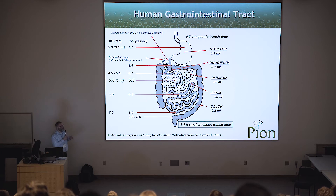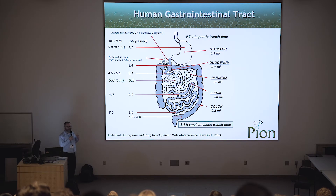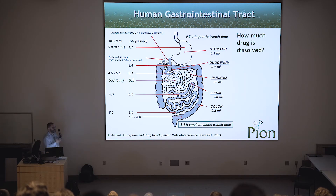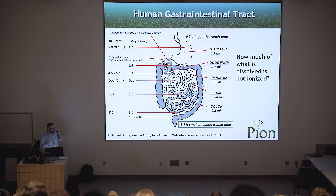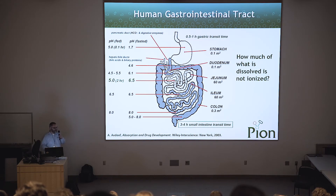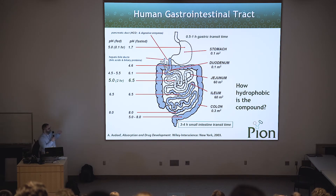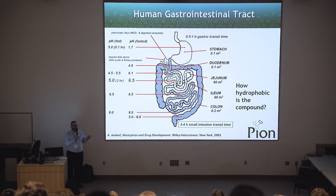What does our company do? Our company develops instrumentation for pharmaceutical companies to do drug research — what happens when you take a pill. We want to answer how much of a drug is dissolved. Say it's a 100-milligram pill: only half of it ever dissolves, of that half only another half maybe is ionized, which means it's only the neutral species that can cross the membrane. And of the half that is unionized, it takes time to go from your intestines into your bloodstream, so you may still lose even more. Our instruments, by and large, answer these questions.